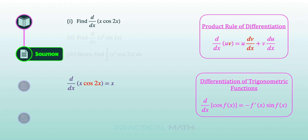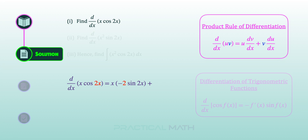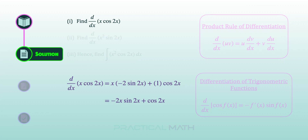To differentiate cosine 2x, we use the formula for differentiation of trigonometric functions: differentiating cosine f(x) gives negative sine f(x). So differentiating cosine 2x gives negative sine 2x, then multiplied by the derivative of the angle 2x, which gives 2. The next step of the product rule is to copy down v, which is cosine 2x, followed by the derivative of u — differentiating x gives 1. Simplifying gives the result: negative 2x times sine 2x plus cosine 2x.